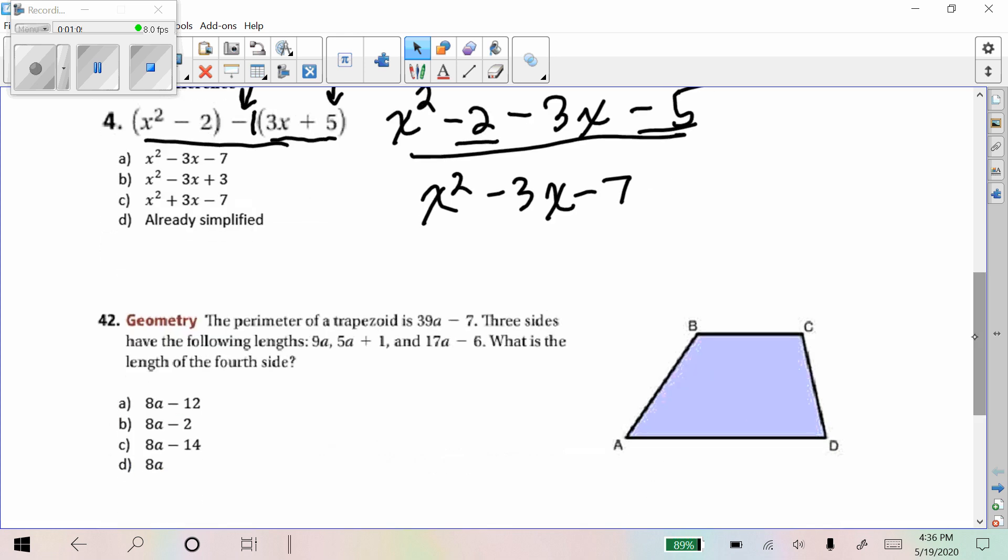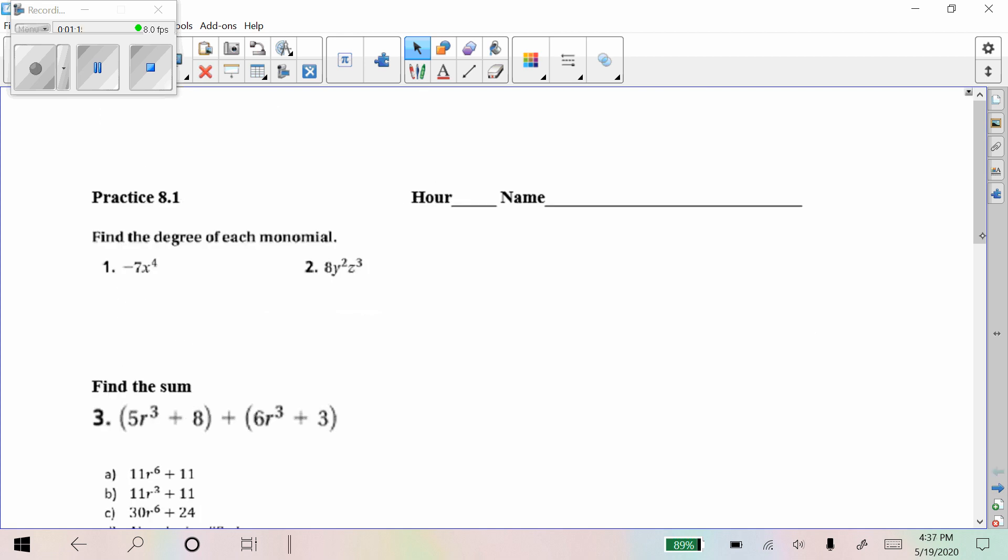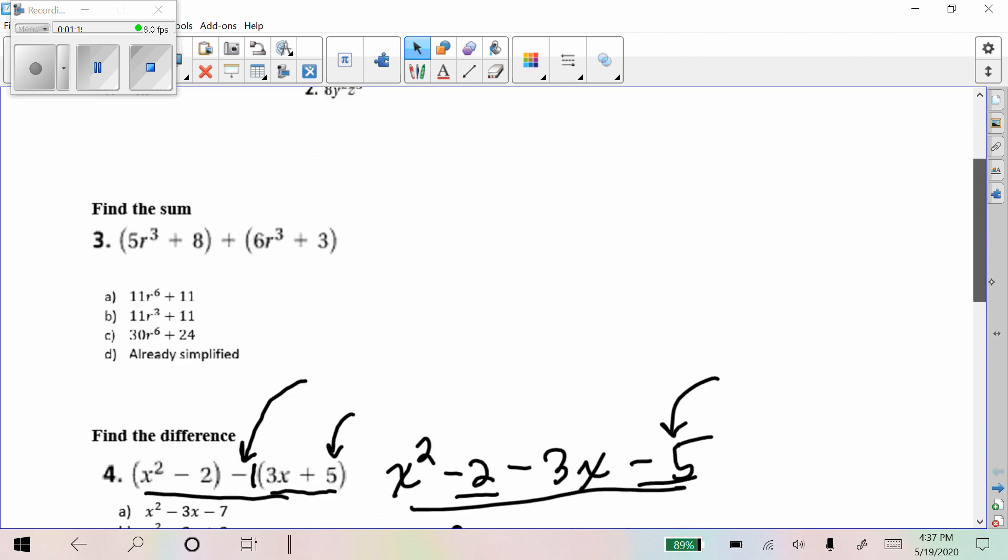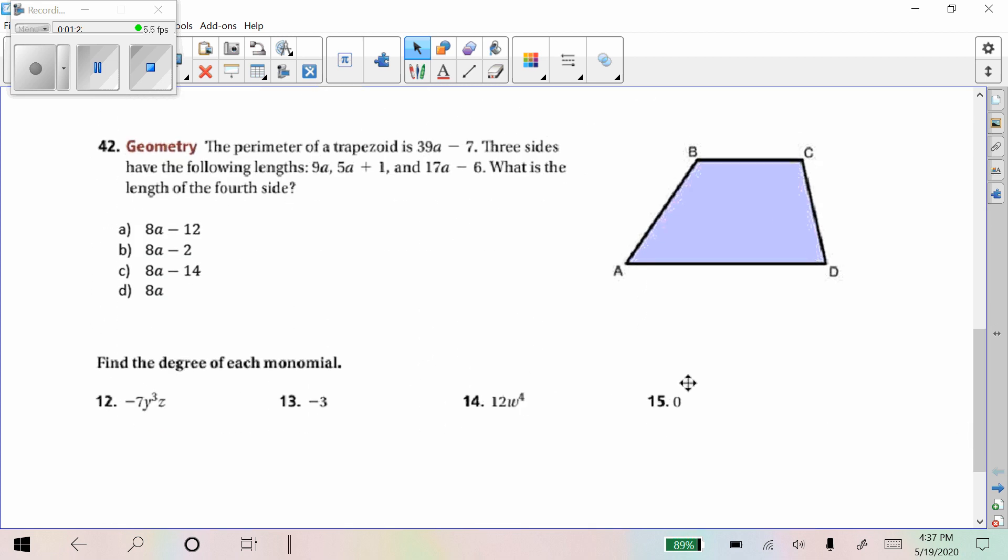Okay, the next one that some students had issues with is number nine. And that's this one right here. What would be the degree of the monomial? Well, now some of you might have got it wrong just because I was late to having an answer in the answer key. So anyway, the answer is none.